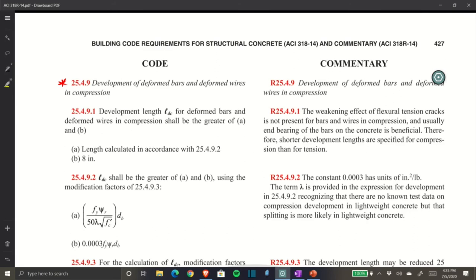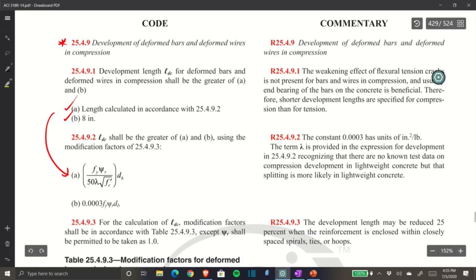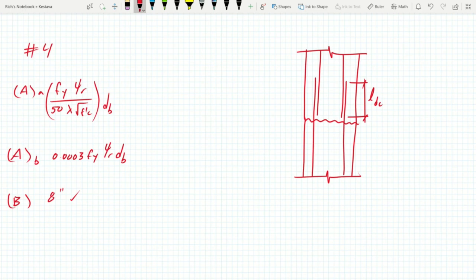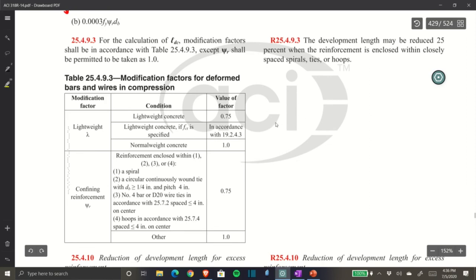Here we are on page 427, section 25.4.9, development of deformed bars and deformed wires in compression. If we jump down, we see that development length LDC of deformed bars is based on two options. You have option A, which is length calculated in accordance with the below equation, or option B, which is just straight up eight inches. Then, to take it one step further, option A is split up into two different equations you have to check. Option B is just eight inches. The two equations, we do need C sub R and lambda, but lambda is 1.0.